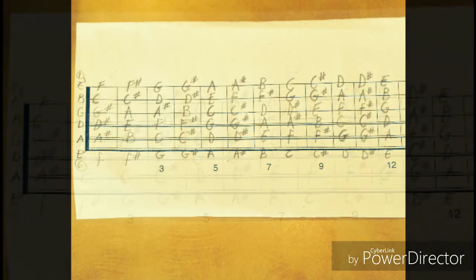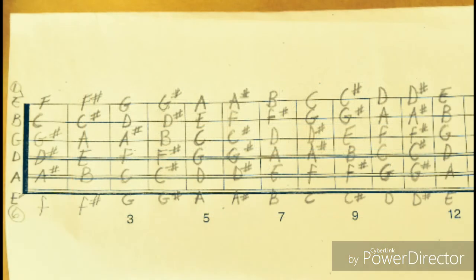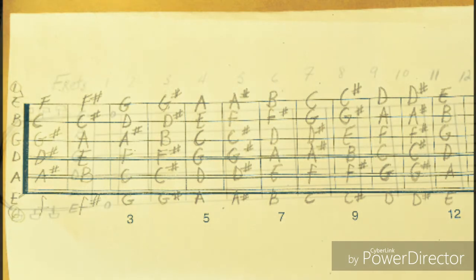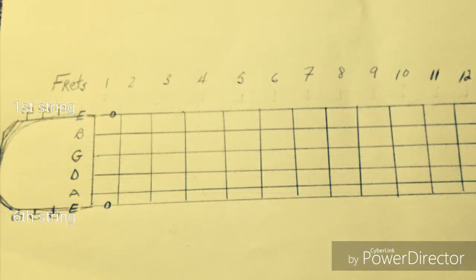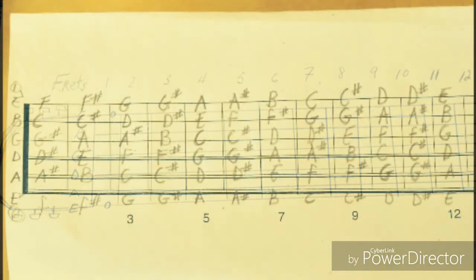Also, note that when we make this map and identify different locations of notes due to the strings, we can apply certain points of references in the process for memorization purposes. Take either the first or the sixth string, for example. In analyzing the patterns of notes from the map, we can develop points of references to improve memory of the placements of the notes.